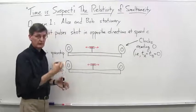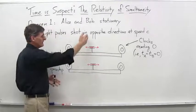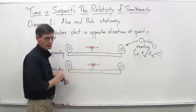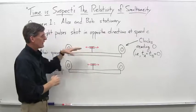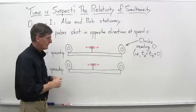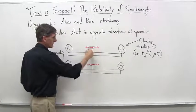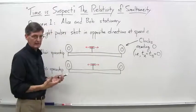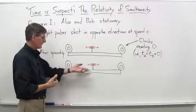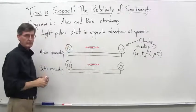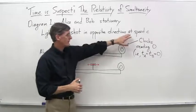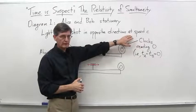And then in the middle of each spaceship, the exact middle here, or exactly between the two clocks, we have a little apparatus that can shoot out a light pulse in either direction. So it can shoot out a light pulse in that direction and that direction at exactly the same time. And same thing for Bob down here. So we have light pulses shot in opposite directions. They obviously travel at the speed of light, at speed C.